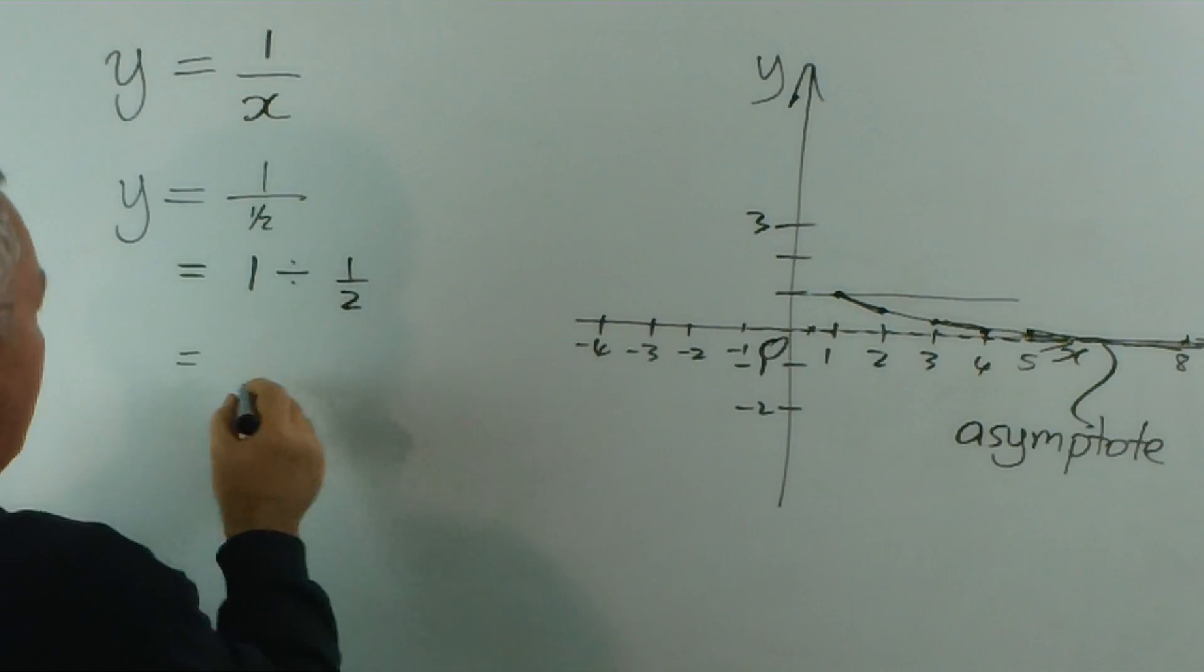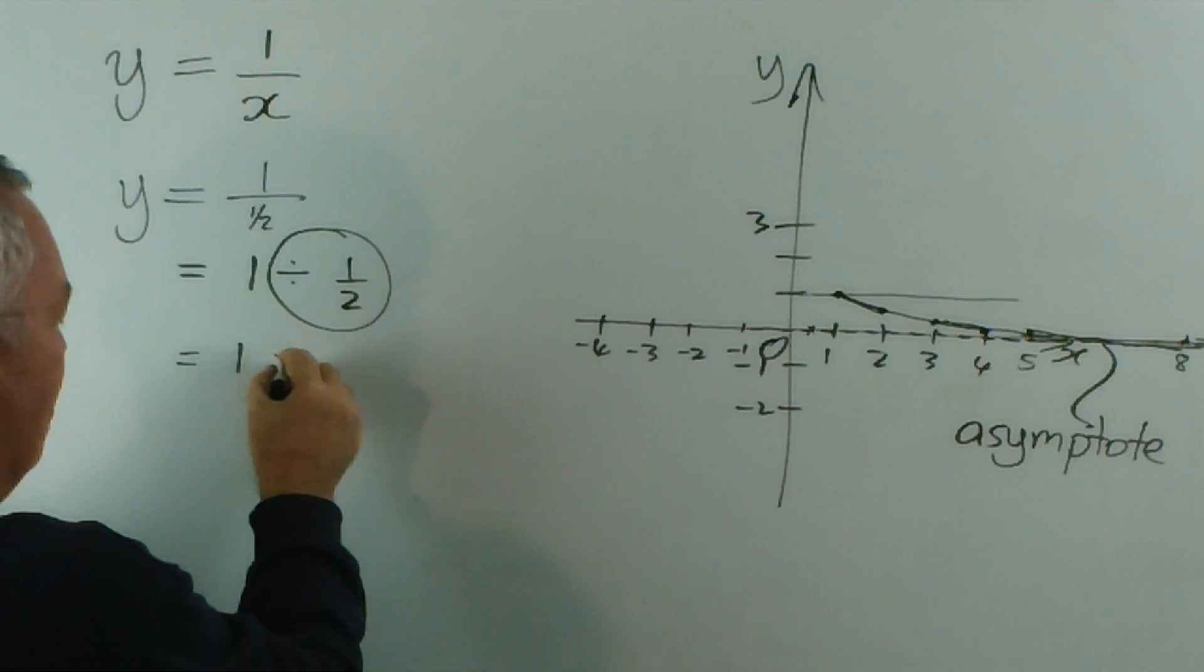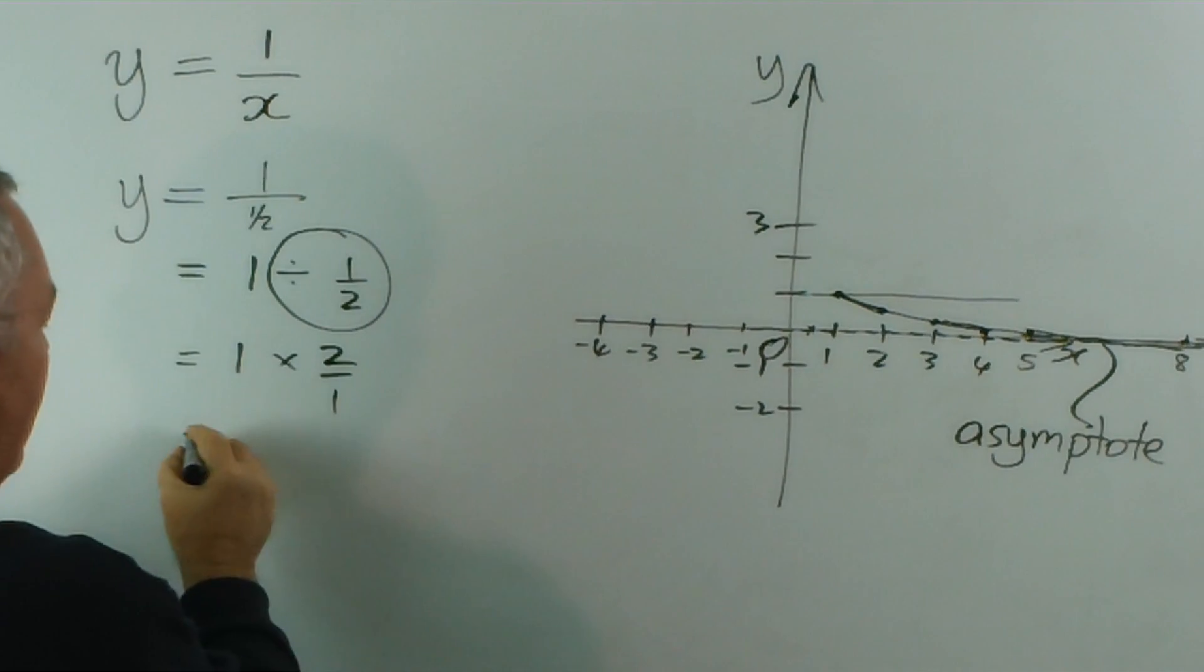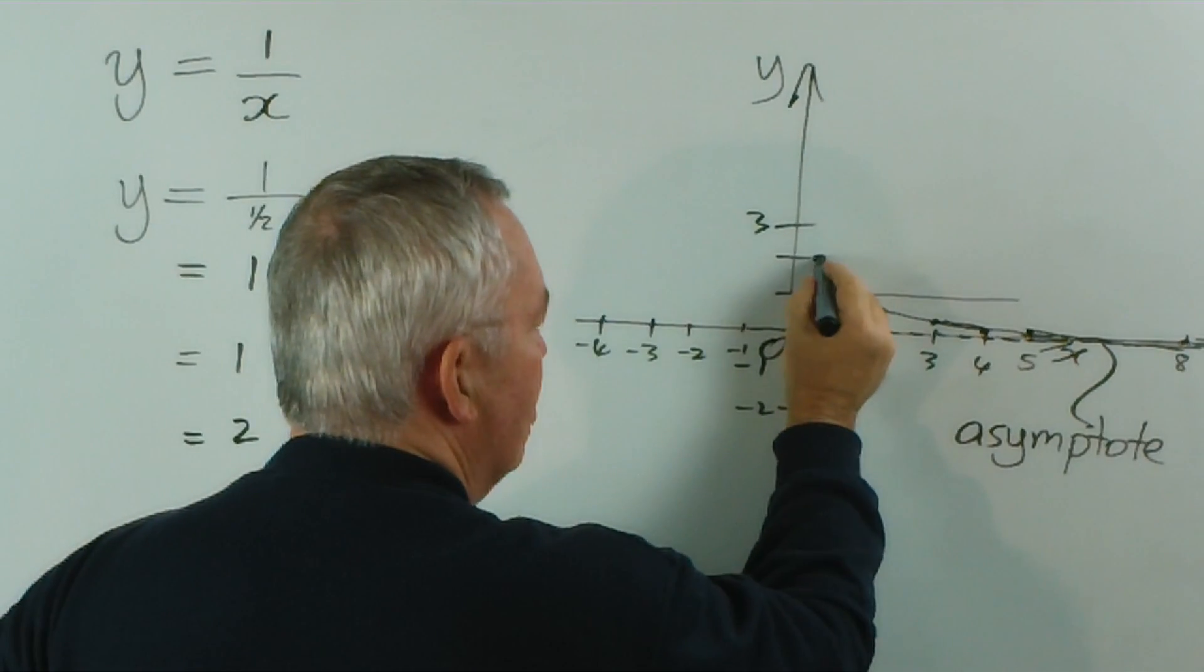And I hope you can remember, you should know how to divide by a fraction. And that is, we multiply by the reciprocal. And 1 times 2 over 1 is just 2. So in fact, the value we get at this point is plus 2.